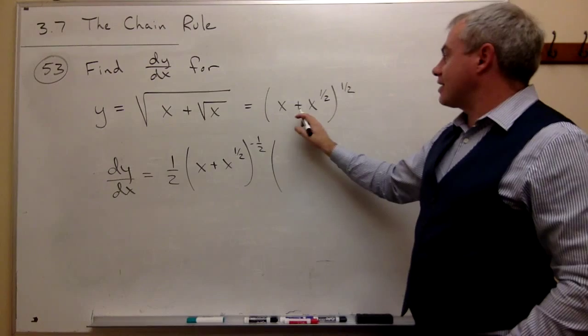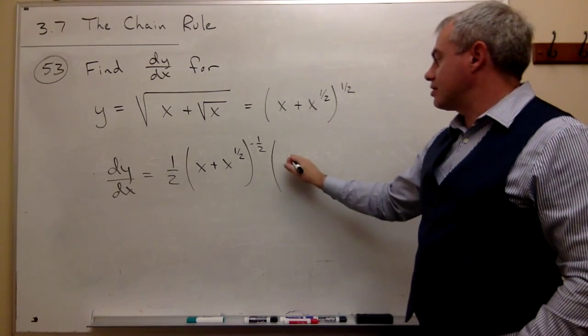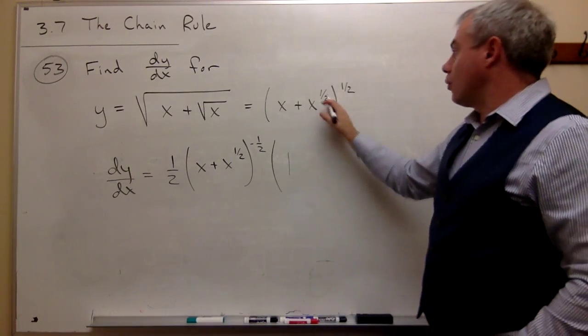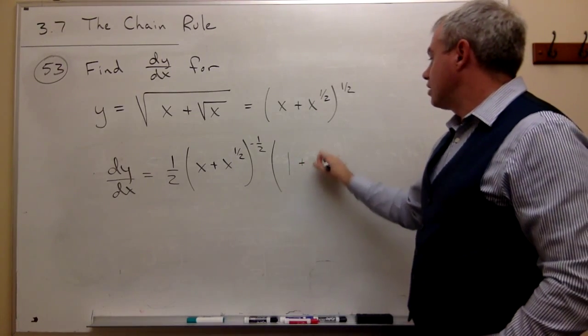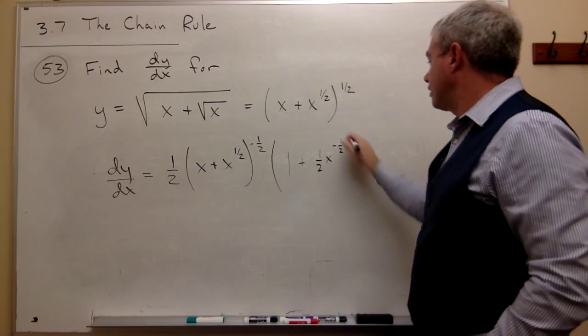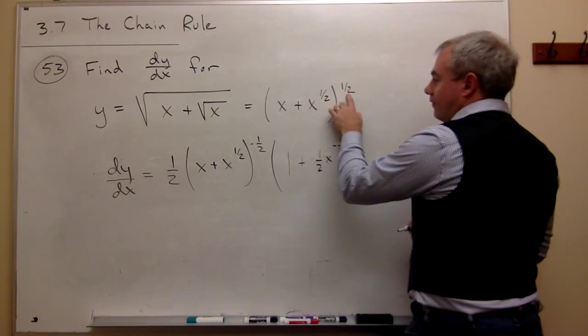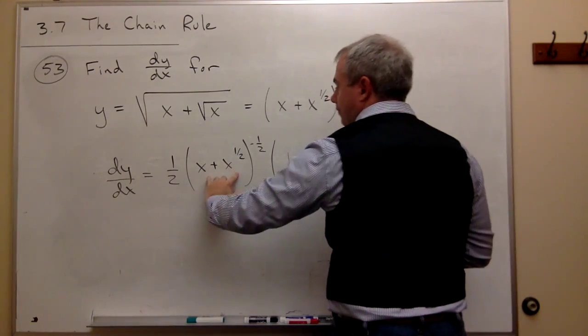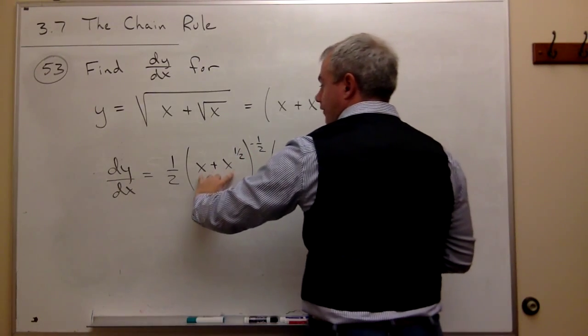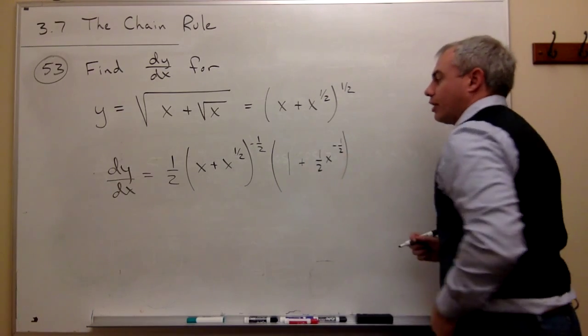But the derivative of x plus x to the one half, well, the derivative of x is one. And the derivative of x to the one half is one half x to the negative one half. So I have something to the one half is one half something to the negative one half. And then I have to multiply by the derivative of the inside, which is one plus one half x to the negative one half.